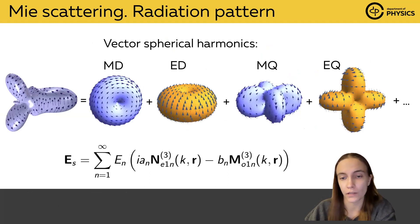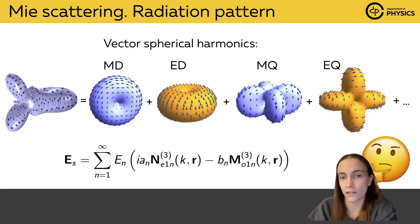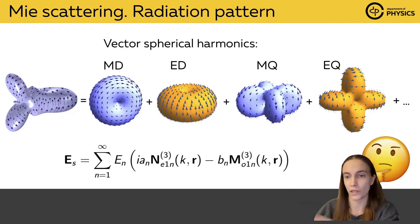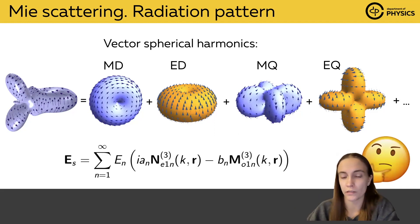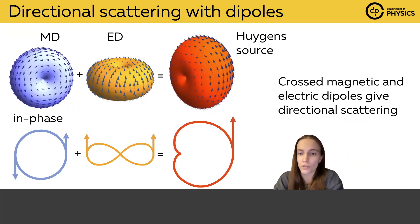We now know that any radiation pattern is just a sum of particular multipoles. If you look at such multipoles, you will see that the radiation patterns are always symmetric — every particular multipole scatters the same amount in the backward direction as in the forward direction. So how can we get an asymmetric total radiation pattern if all of these multipoles are individually symmetric? Well, it is very simple — let us just look at the dipoles.